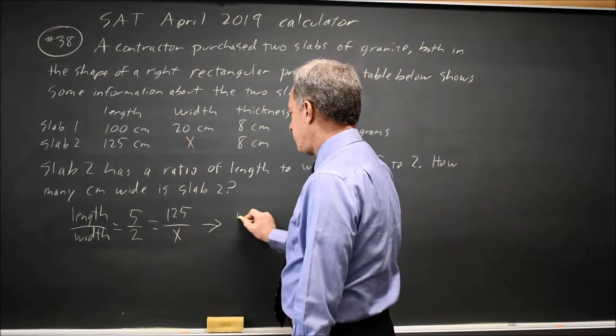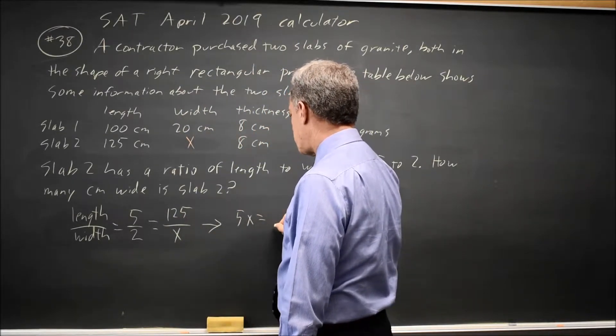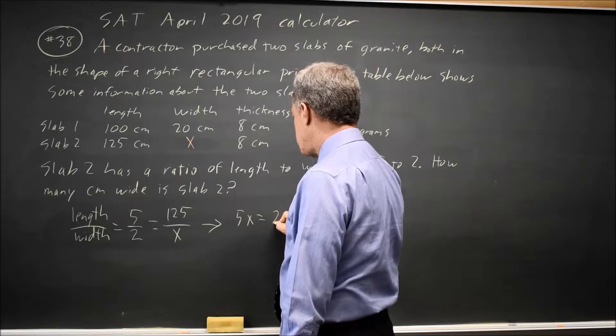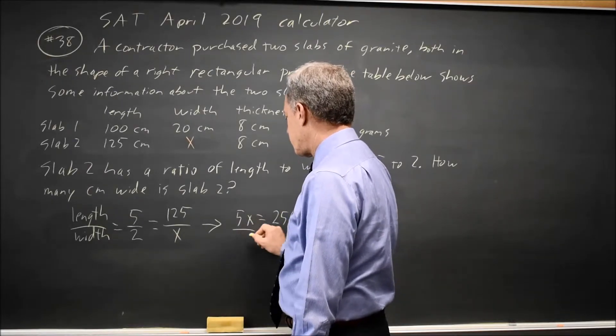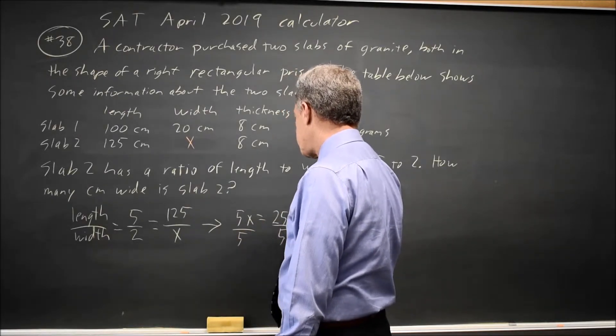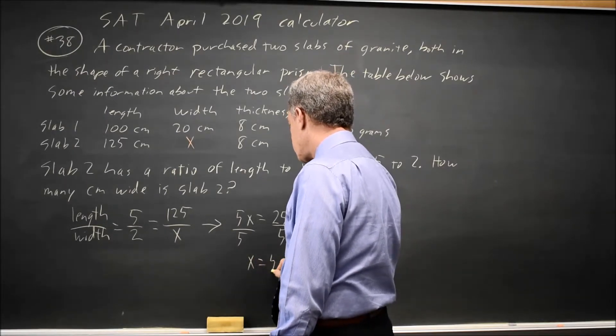If I cross multiply that gives me 5x equals 125 times 2 is 250. And solving for x if I divide both sides by 5 I get x equals 50.